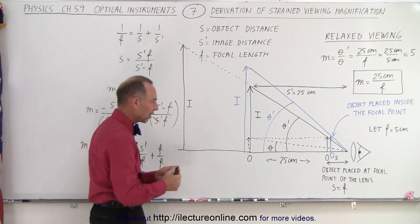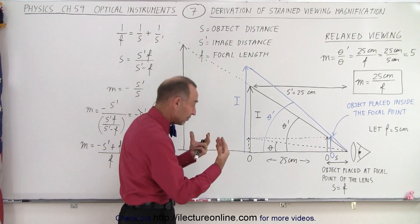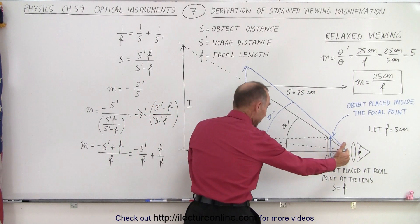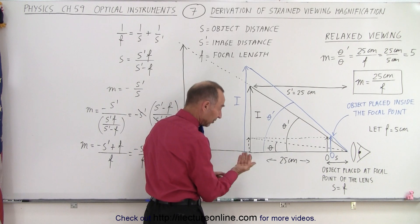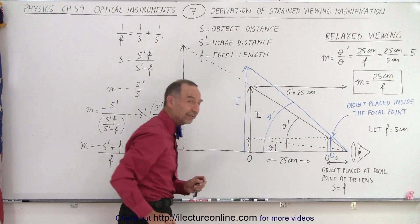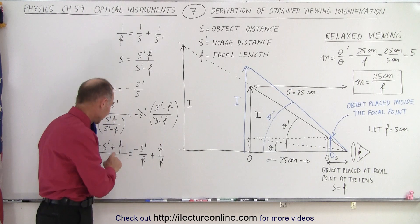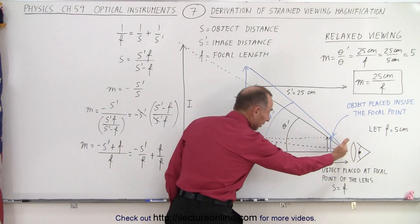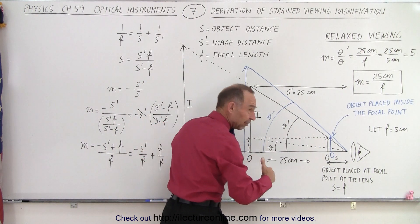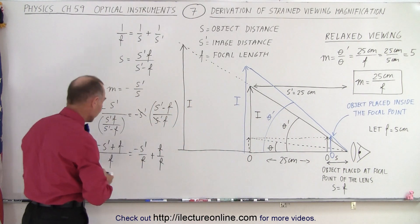Now notice that S prime, since we're looking with strained vision, we're going to put the image at the near point as close as possible, and we can still see clearly. That would be at a distance of 25 centimeters, but remember, since it's S prime, the image distance, and the image distance is in front of the lens, that gives us a minus 25 centimeters.